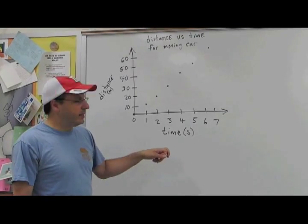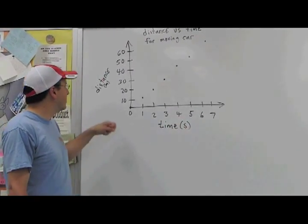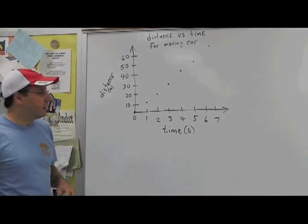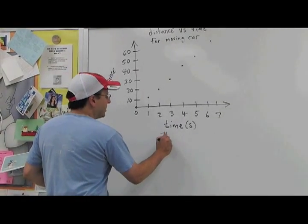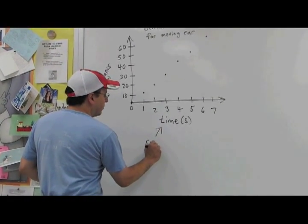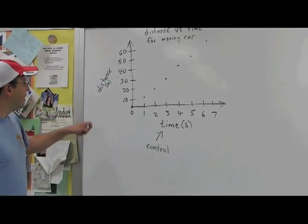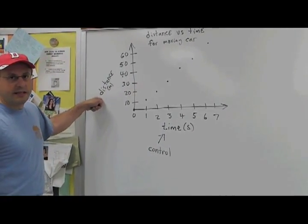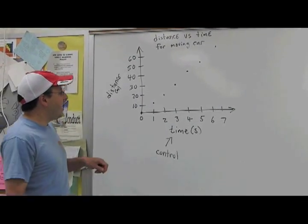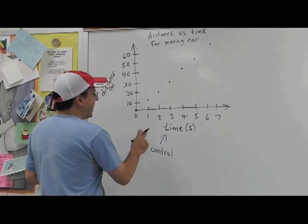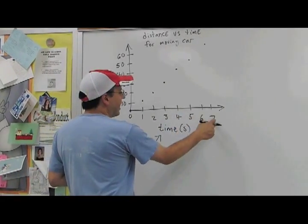So in this case we did time in seconds, distance in meters. The thing on the x-axis is the thing that you control. This is called your independent variable. The thing on the y-axis is the dependent variable. In addition to labels on the axis, you want to make sure you scale your axis.